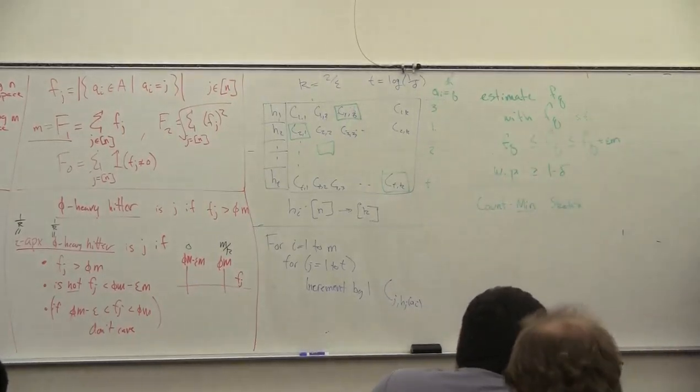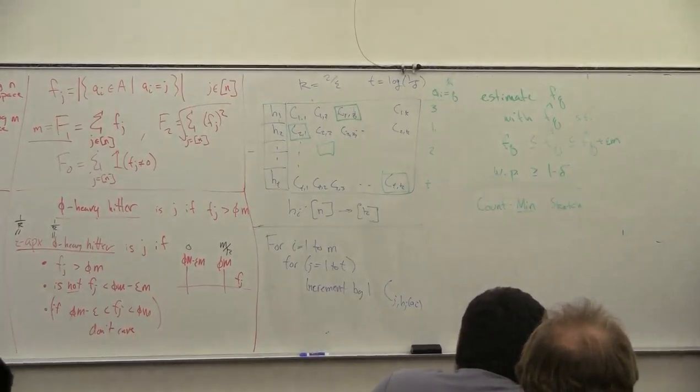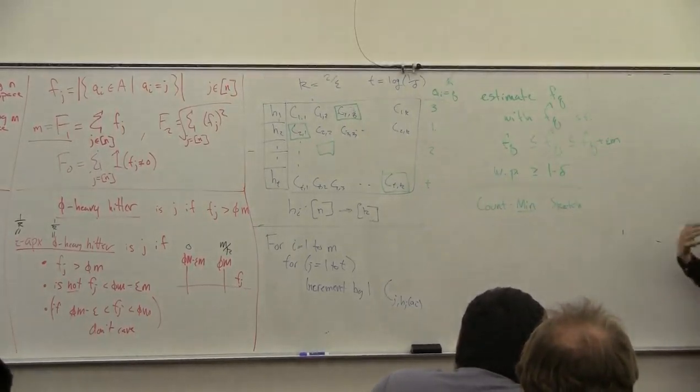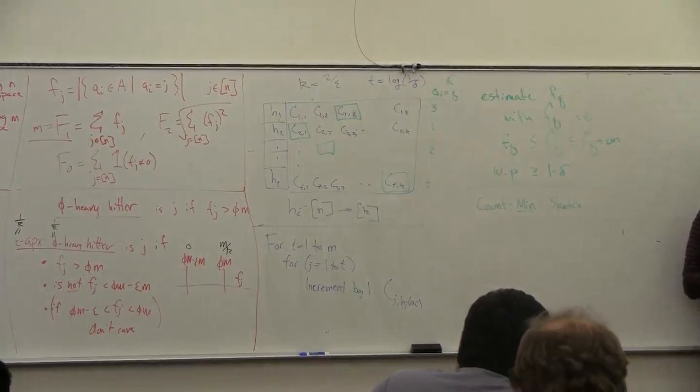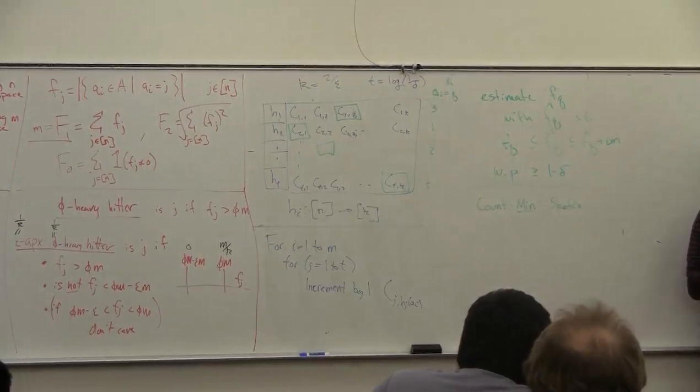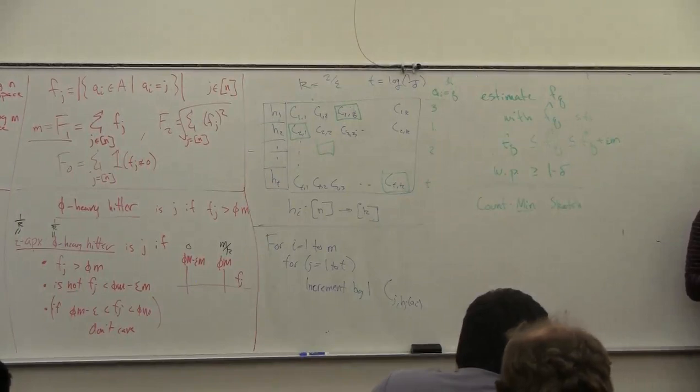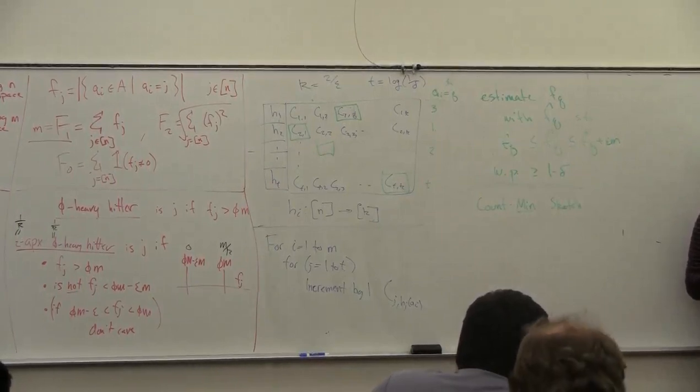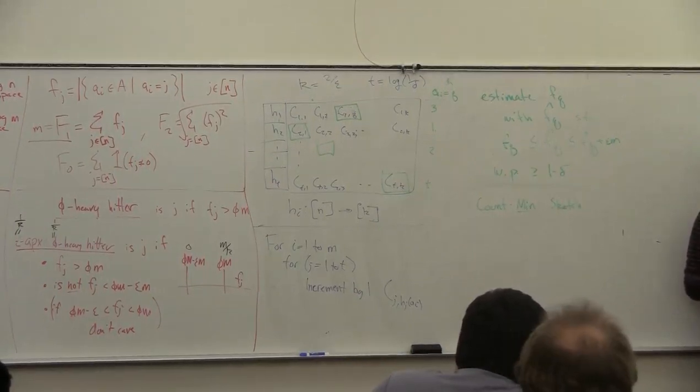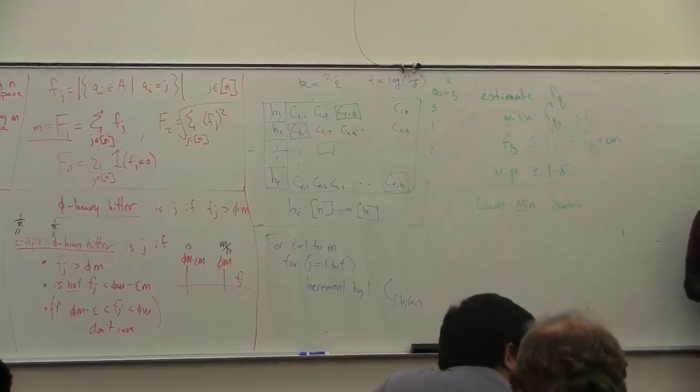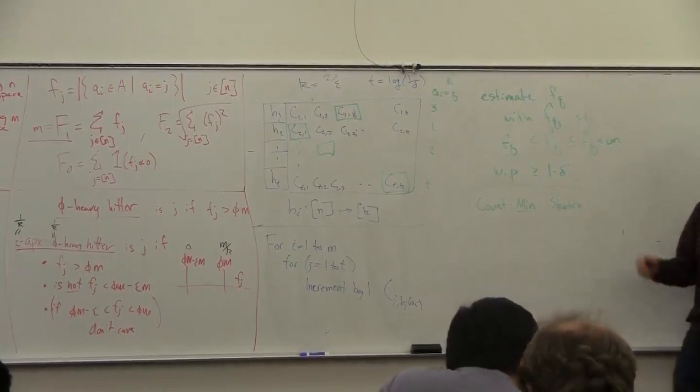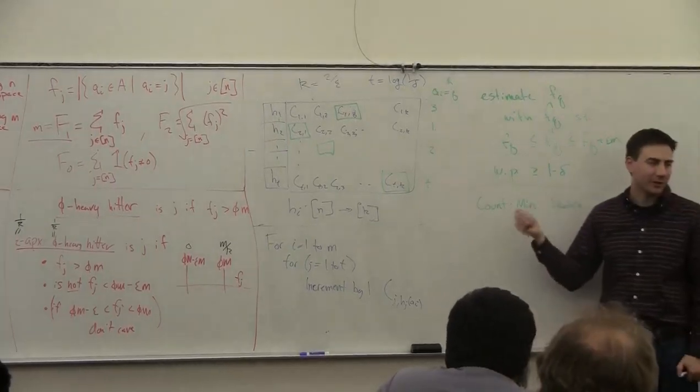Okay, so I have these t different estimates of it, and how do I use these together to get the best estimate? You picked the smallest one, right? Because they're all going to be at least as big as the right counter.